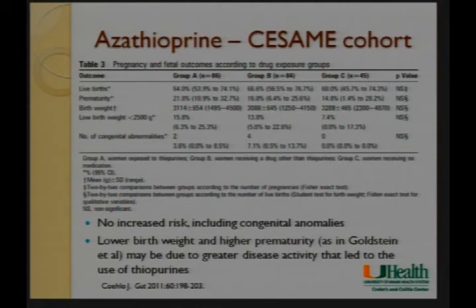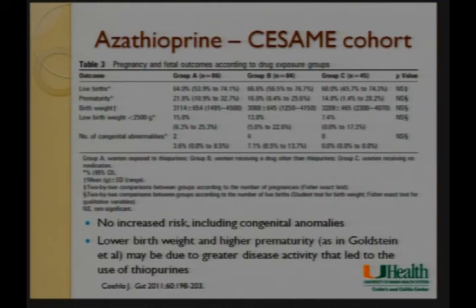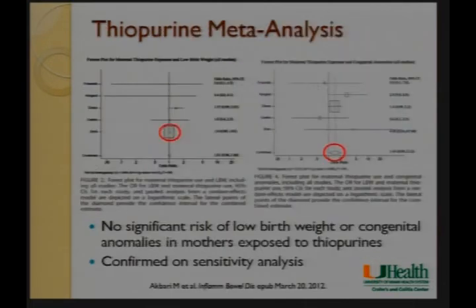What this means is that probably the risk isn't the azathioprine — it's that those patients on azathioprine had more significant disease, and therefore disease activity was driving most of these negative outcomes, not the thiopurine itself. When you normalize for disease severity by comparing to those who had needed thiopurines in the past, almost all statistically significant negative endpoints went away. The largest cohort — the French CESAME cohort — showed no increased risk of any negative outcome including congenital anomalies on azathioprine.